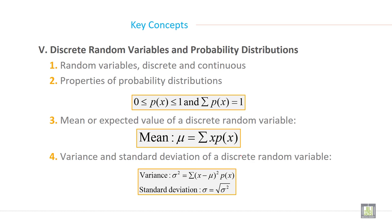Discrete random variable and probability distribution. Random variables, discrete and continuous. There are two types of probability distribution: discrete probability distribution and continuous probability distribution. So discrete probability distributions are three types and continuous probability distributions are three types. So total probability distributions are six types.